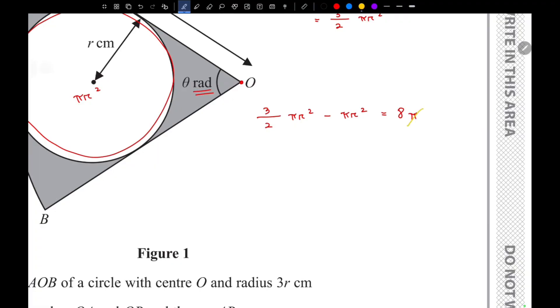So this π cancels out, so we are left with 1/2 R² equals 8, and the value of R² is 16. So the value of R is actually 4, and we know that R cannot be negative 4.